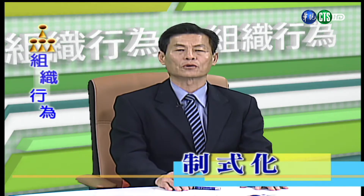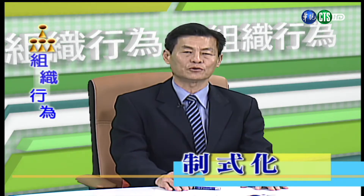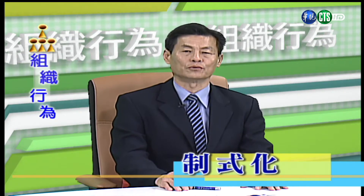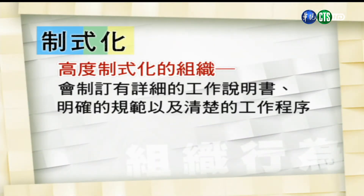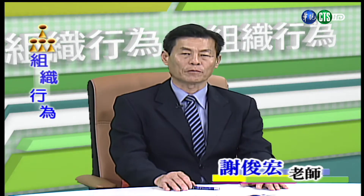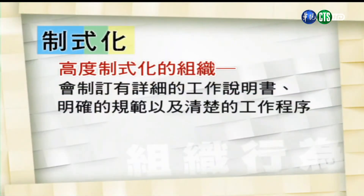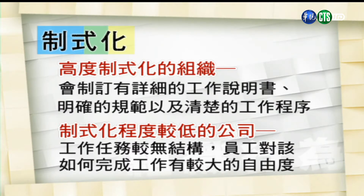第六个关键因素是制式化。所谓制式化是指经由工作的标准化，让员工能够遵循公司的规章与程序而形成的程度。在高度的制式化组织里面，会制定非常详细的工作说明书、明确的规范以及清楚的工作程序，员工该做什么、何时做、如何做等并不需要很多的考量。制式化程度较低的公司，工作任务较没有结构。